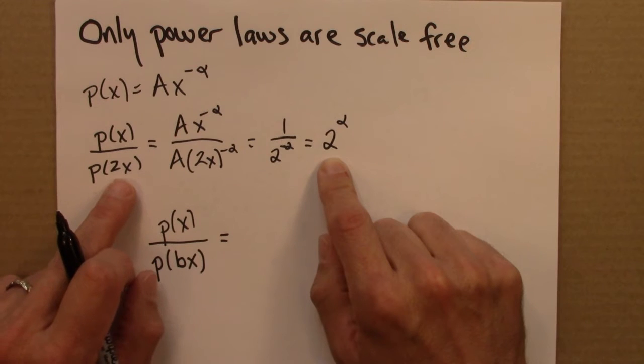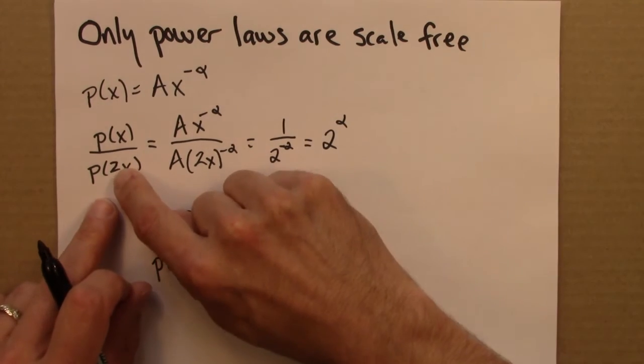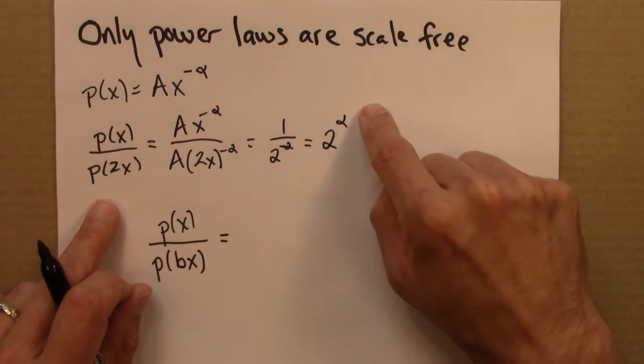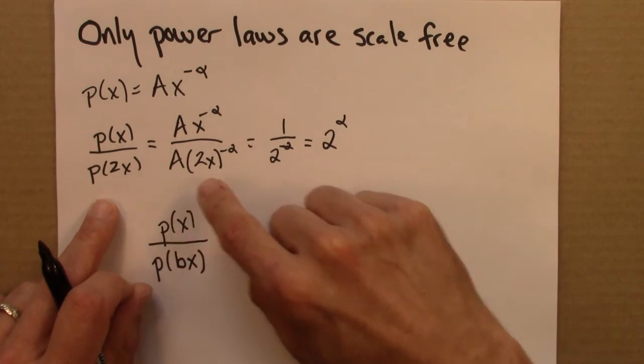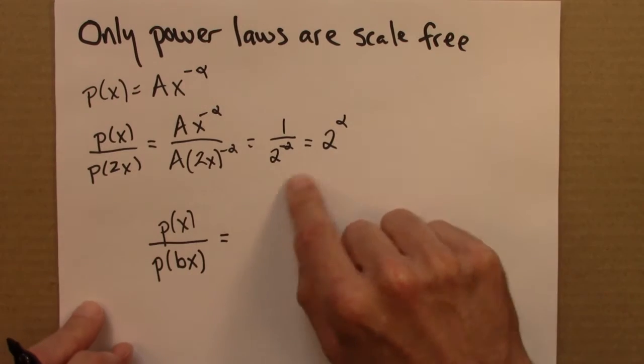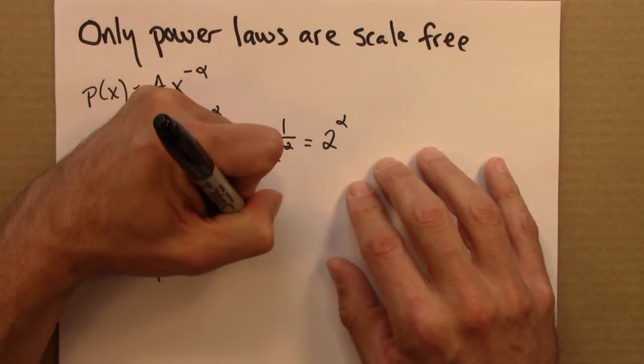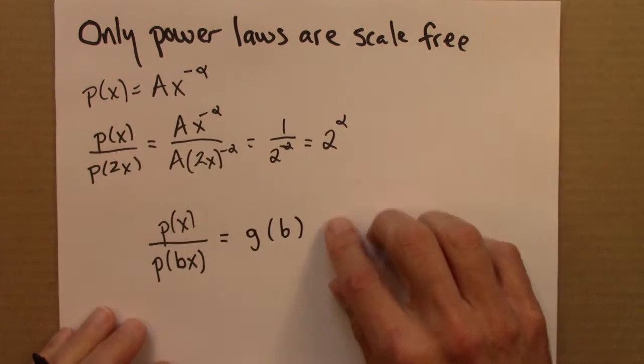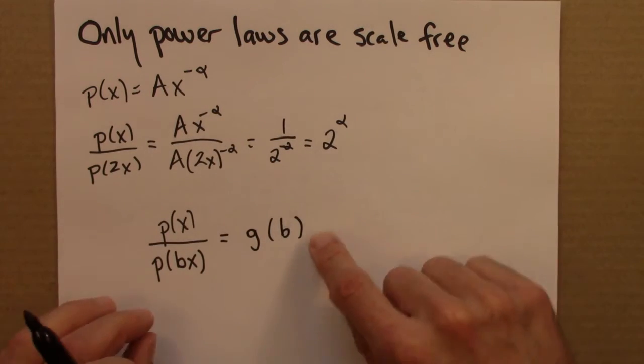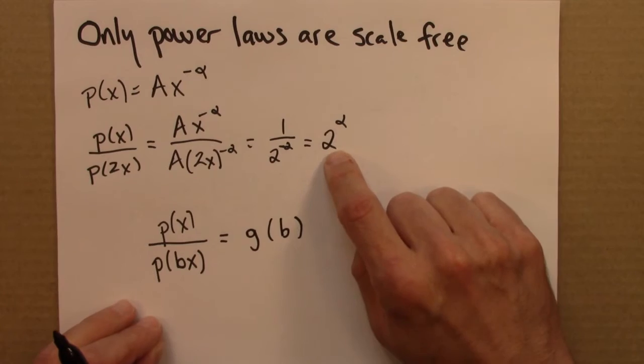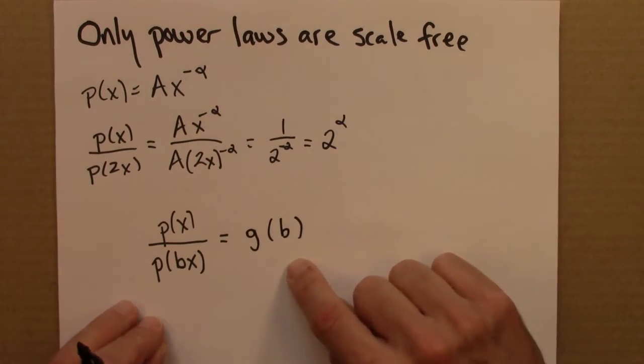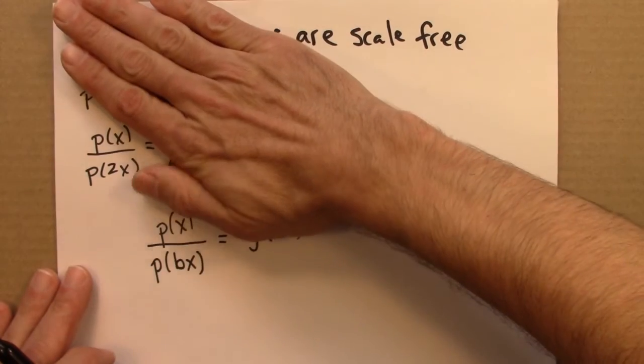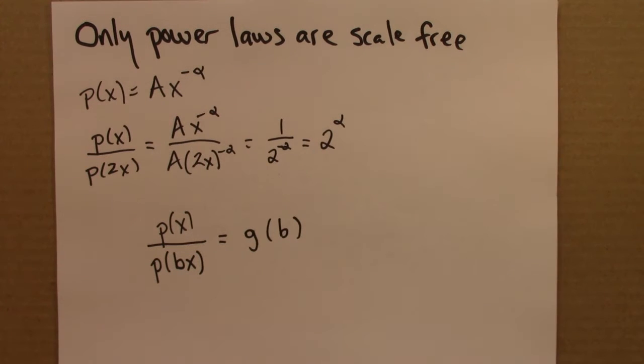It might however, in fact it's going to, depend on B. You can see that if I had a 3 here instead of a 2, this would be 3 to the alpha. So what happens over here is some function of B. In this case it was B to the alpha. But we're going to say, we're not going to assume it's a power law. I'm just going to start from this formula.